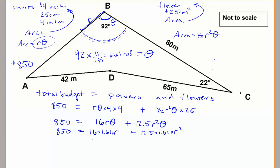So simplifying here, with a bit of rounding, we get roughly 25.69r plus 20.07r² has to equal 850. So this is a quadratic equation that we do need to solve.